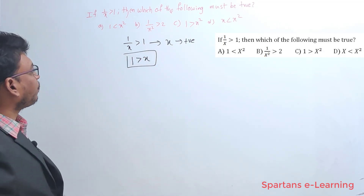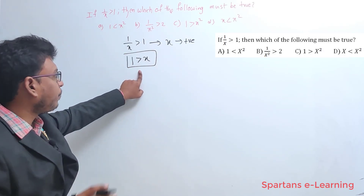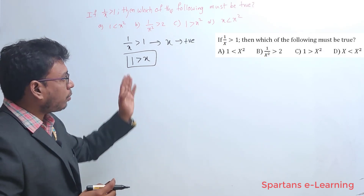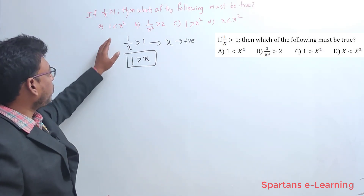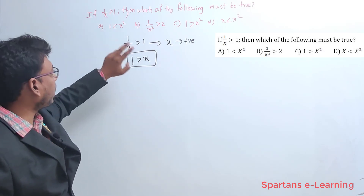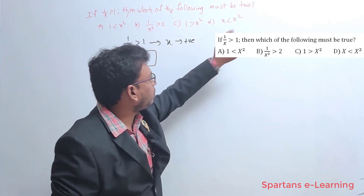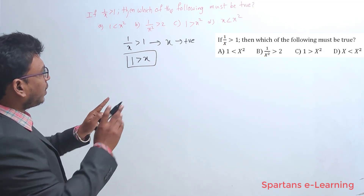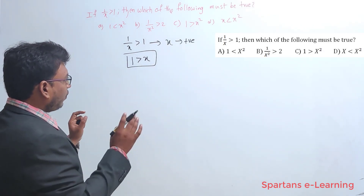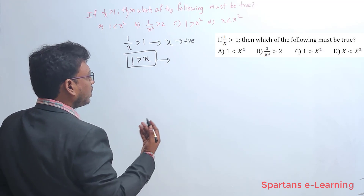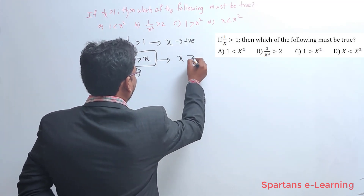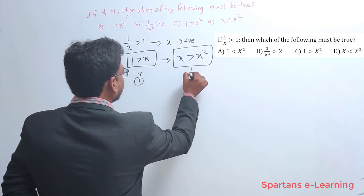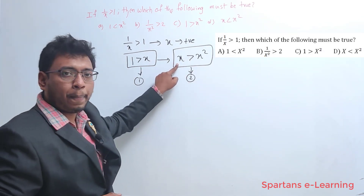We got 1 > x. Is this option available? Nowhere in the options is it available. You should focus equally on the given options, because options tell you the approach. In the options, the relation is between 1 and x², or between x and x². So I will multiply both sides by x again — since x is positive — getting x > x². This is our second observation.